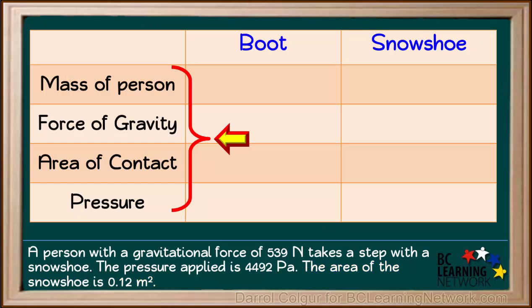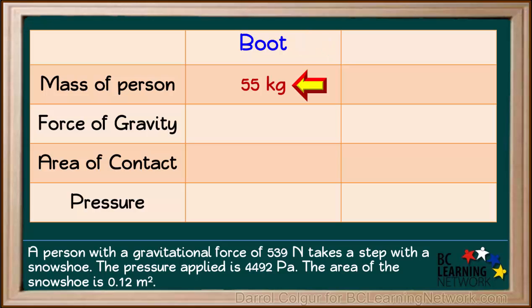In this table, we'll compare the mass and force of gravity of the person, the area of contact, and the pressure applied by taking a step with a boot and with a snowshoe. We'll start with the boot. The person wearing the boot has a mass of 55 kilograms, which means she has a force of gravity of 539 Newtons acting on her. The area of contact of the boot is 0.028 square meters. And the pressure applied by the boot onto the snow is 19,250 pascals. Because this pressure is so high, the boot will likely sink into the snow.